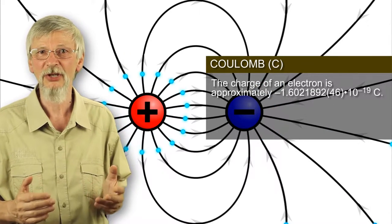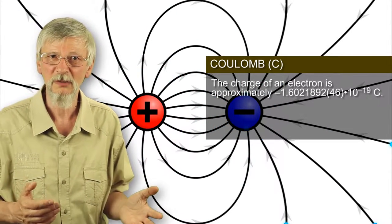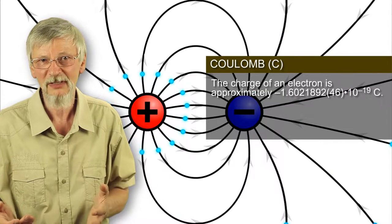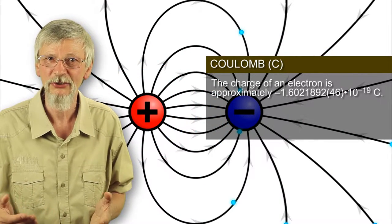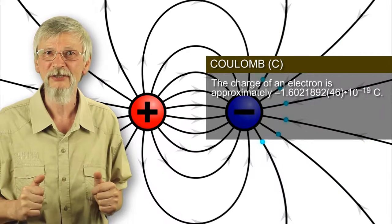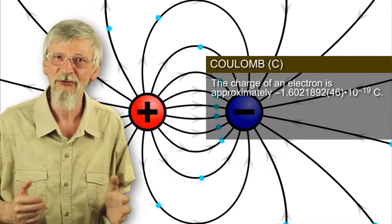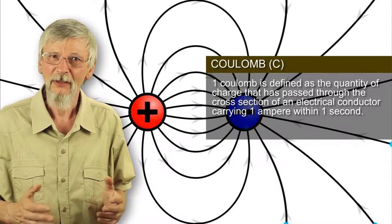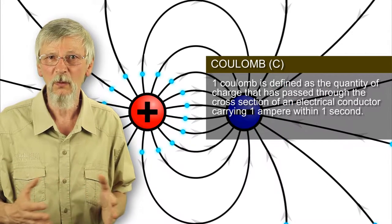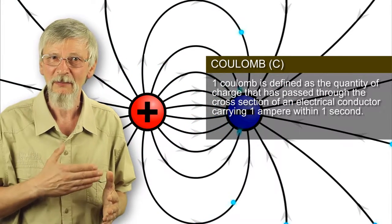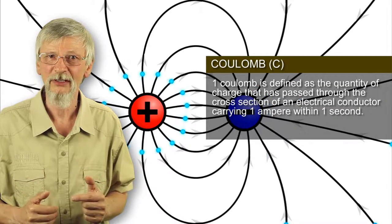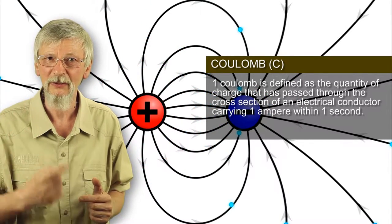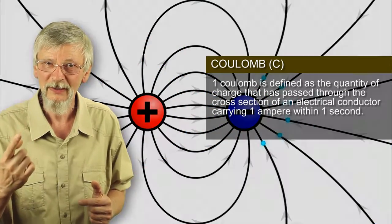Hence, the charge of an electron is approximately minus 1.602 times 10 to the power of minus 19 Coulombs. This charge is called elementary charge. The Coulomb is defined as the quantity of charge that has passed through the cross-section of an electrical conductor carrying one ampere within one second.